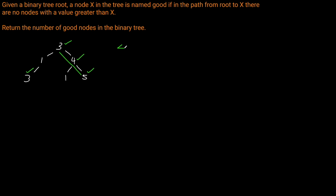So our total good nodes in this tree is going to be 4. Essentially what we want to do is a depth-first search through our tree to explore all possible paths. Along each path, we want to keep track of the maximum value that we've seen. If the current node's value is greater than or equal to the maximum we've seen on the path, then we can increment our total count of good nodes by 1. Otherwise, we simply continue.